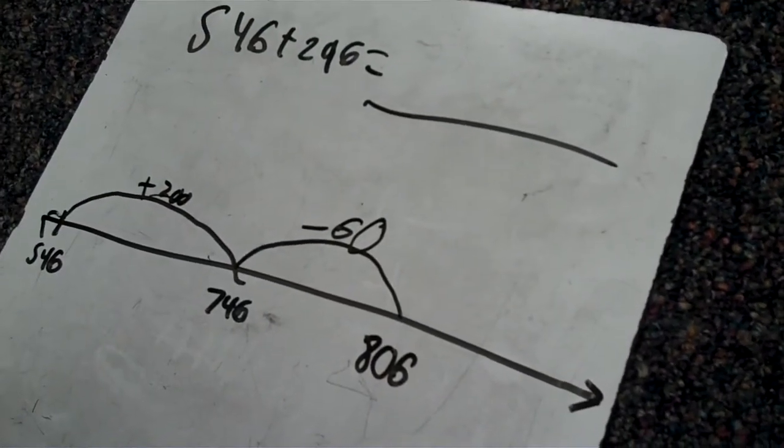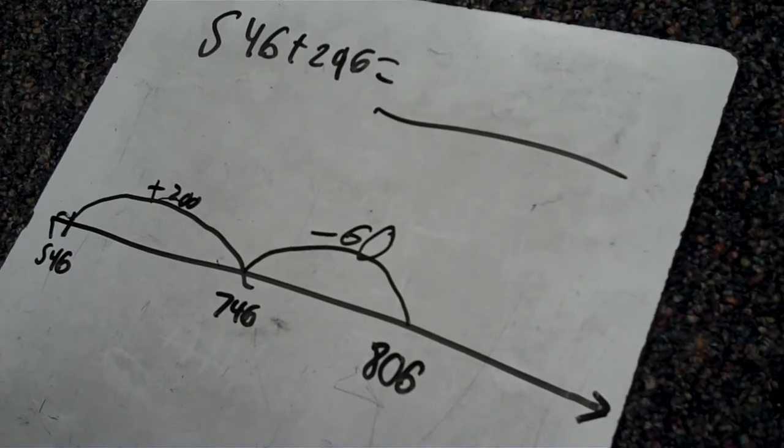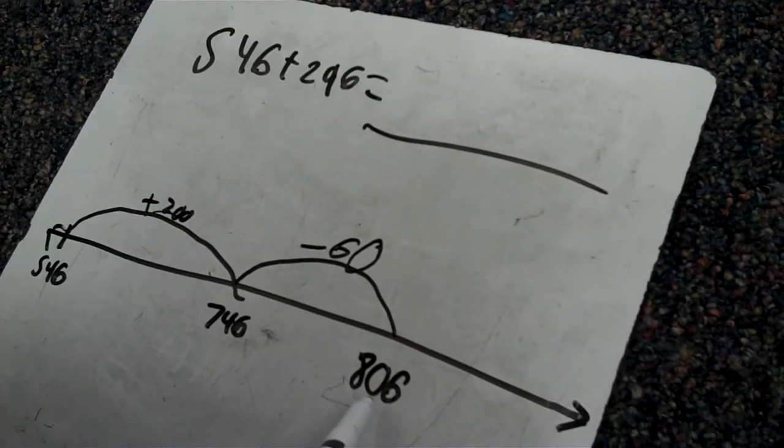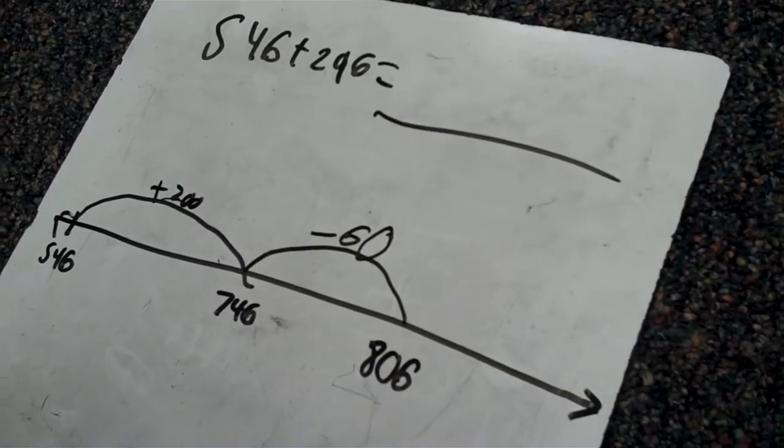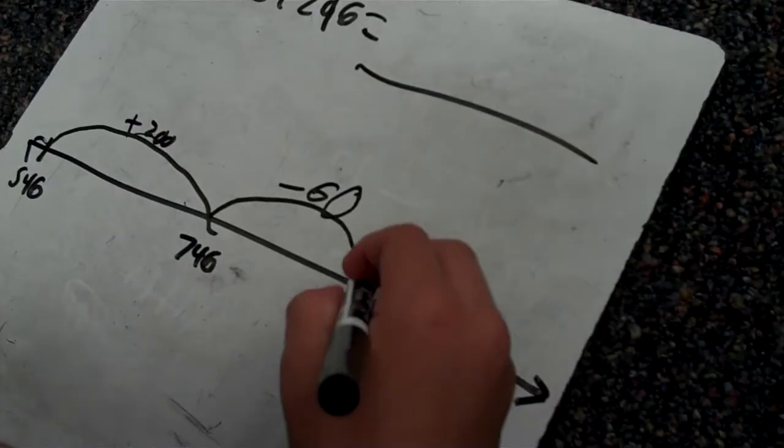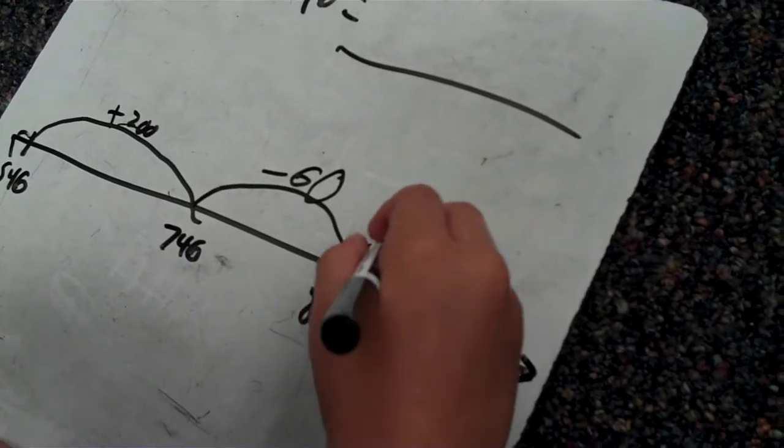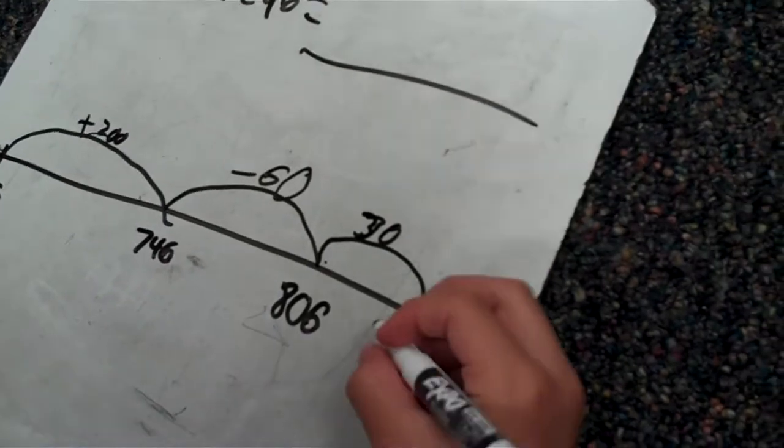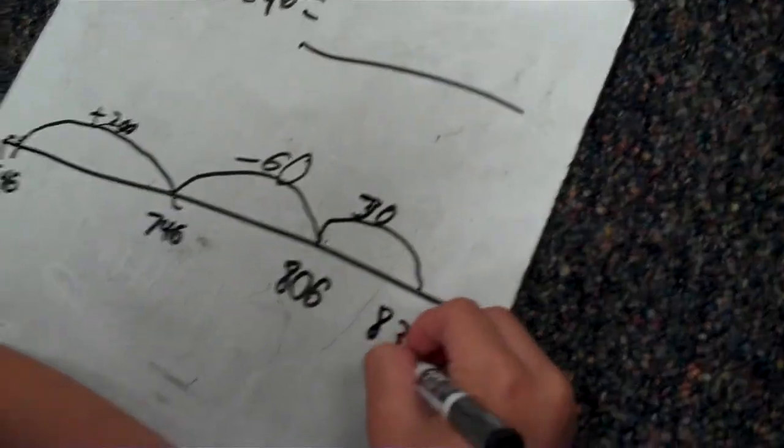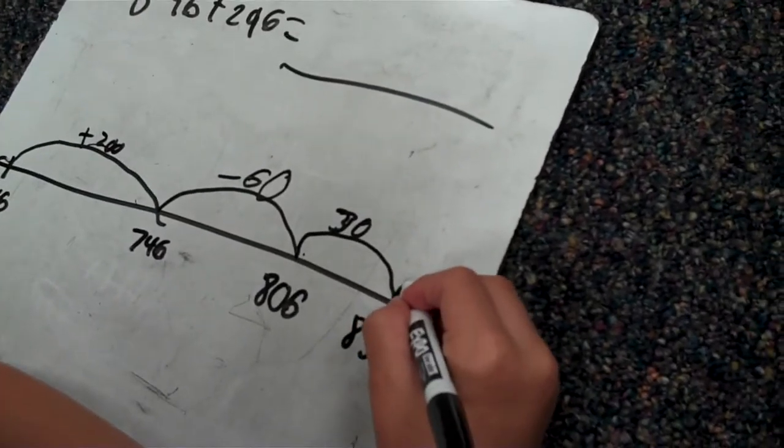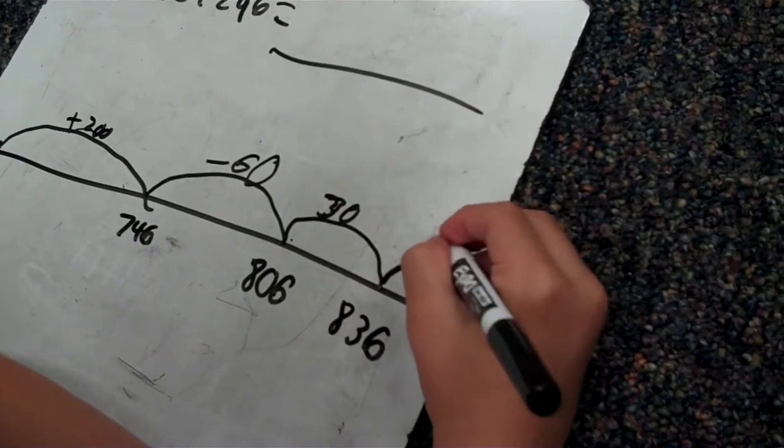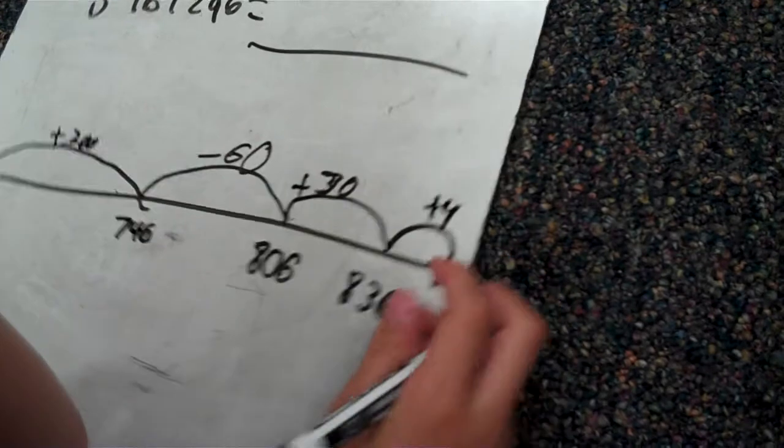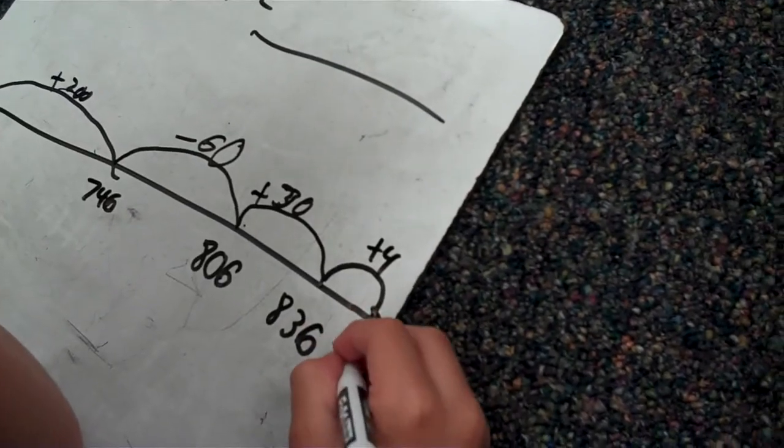So you broke down the 90 and would you break it down into that? I broke it down into 60 and 30. Okay. All right. So you can keep working. So now I'm plusing 30 because it's getting more easier. So that equals of course 836. And then we usually plus 4. And that will equal 840.